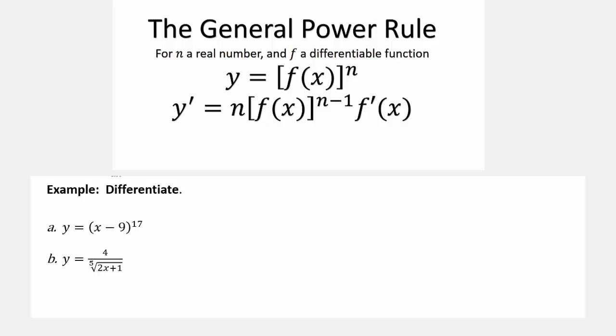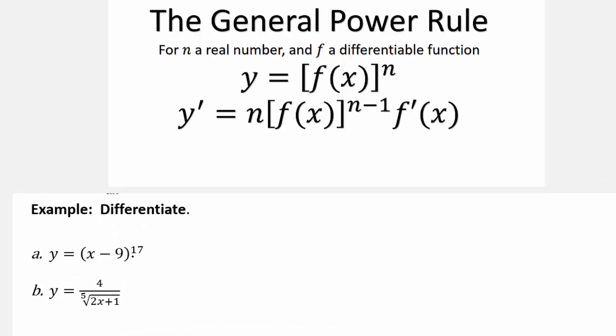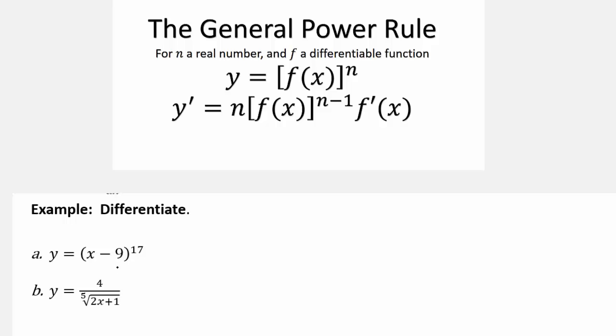So what does the general power rule tell us to do? It says when we have something with an x raised to a power, you bring the power out front, subtract 1 from it, but you have to multiply times the derivative of whatever that was that was being raised to the power.